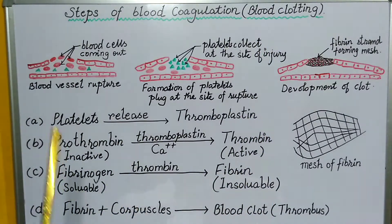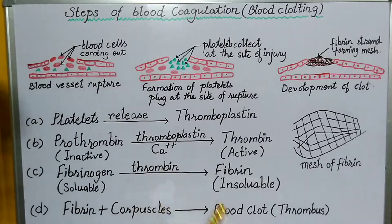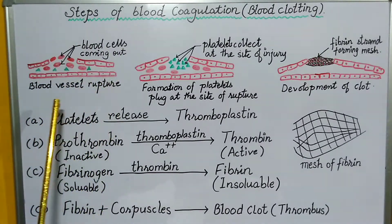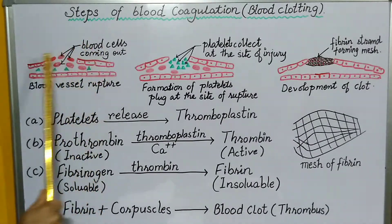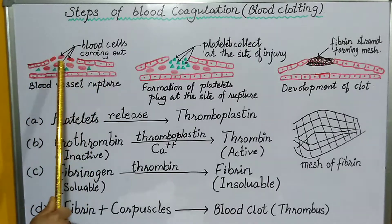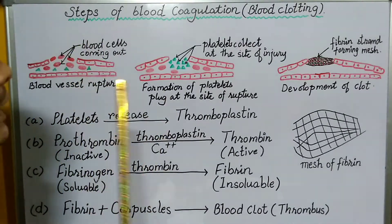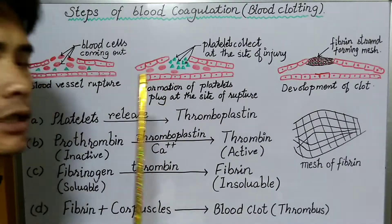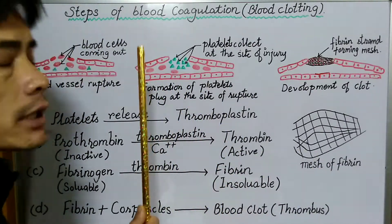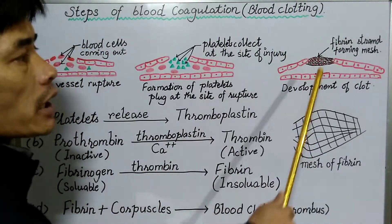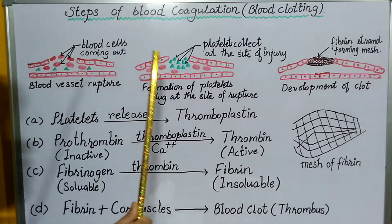When we meet with an injury, the blood begins to ooze out from the injured part. The blood vessel gets ruptured, and as the blood vessel ruptures, the blood begins to come out. As you can see in this diagram, the blood vessel has ruptured and blood is oozing out. However, the blood cannot keep on oozing out because this is brought to a stop by chemical reactions that bring about the formation of a blood clot.